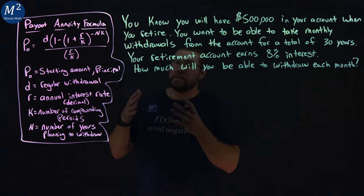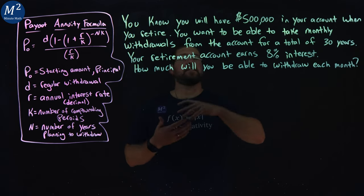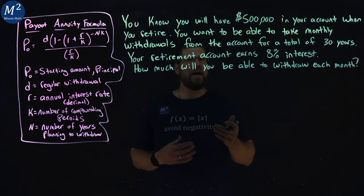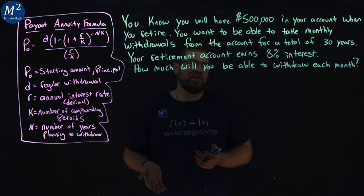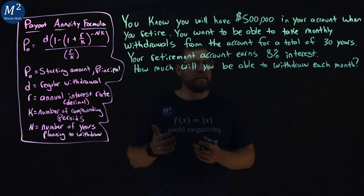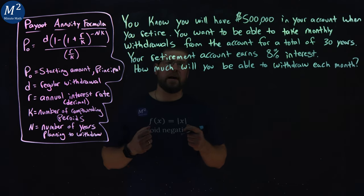Again, this is an annuity formula. We have a lump sum amount in a retirement account that we're withdrawing over time until it goes to zero, but that account also is gaining interest at the same time. So we're pulling money out of this account.